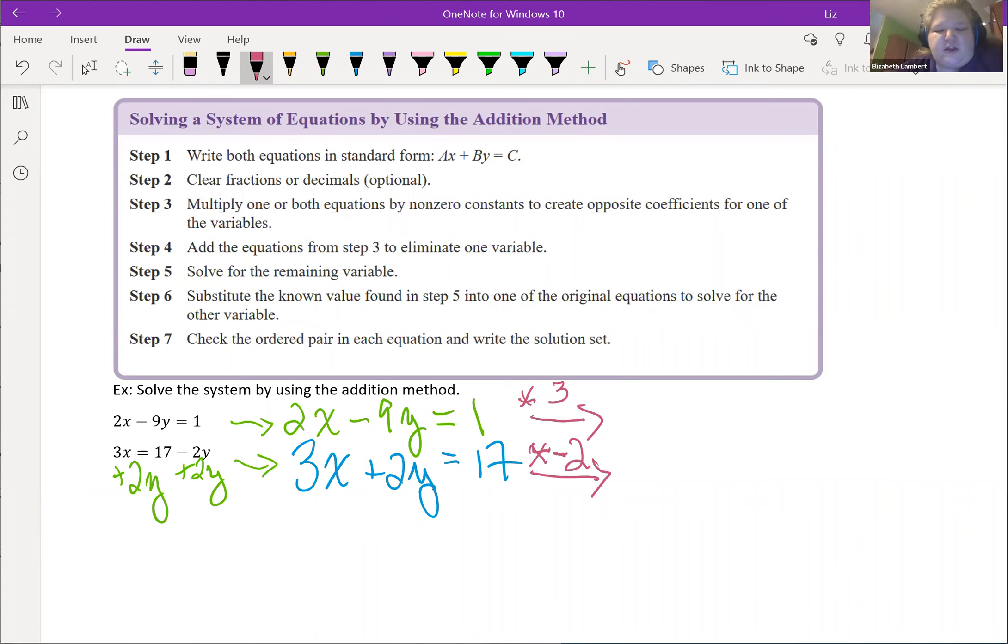Now we multiply. 2x times 3 becomes 6x, negative 9y times 3 becomes negative 27y. The numbers can look big, they work out. And then over here equals 1 times 3 is 3.